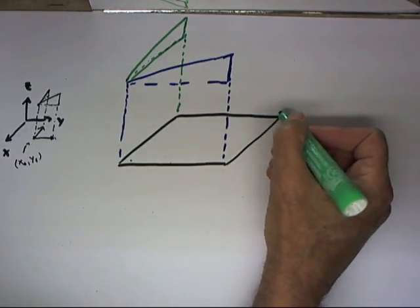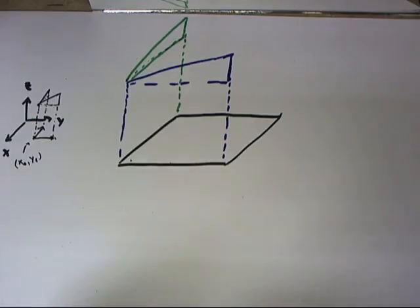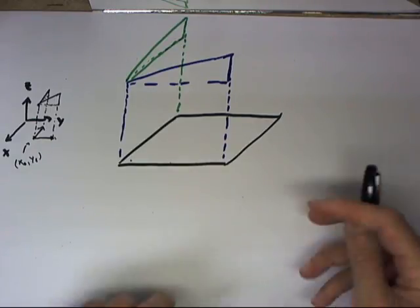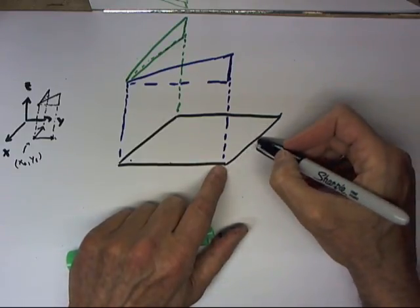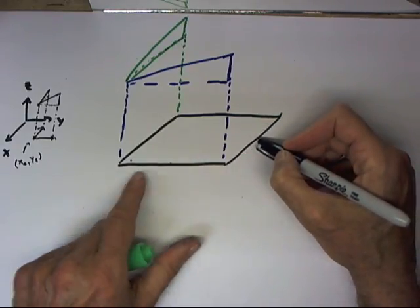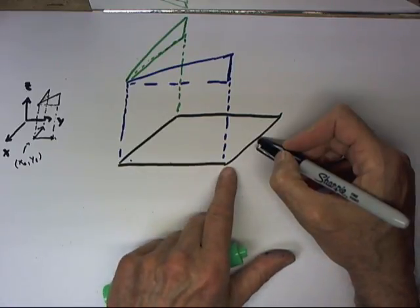And if we go to this point here, we expect the same change in z due to the x or very nearly the same change in z because the x derivative hasn't had enough room here to change very much.